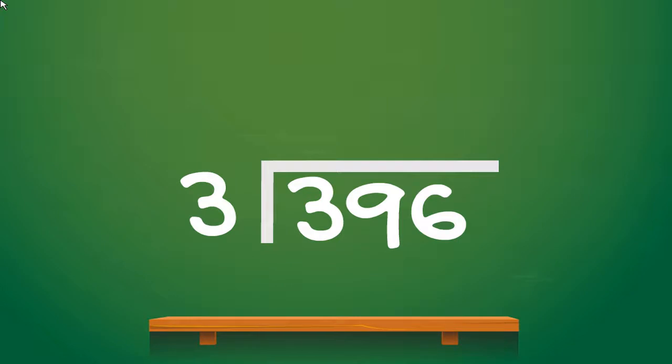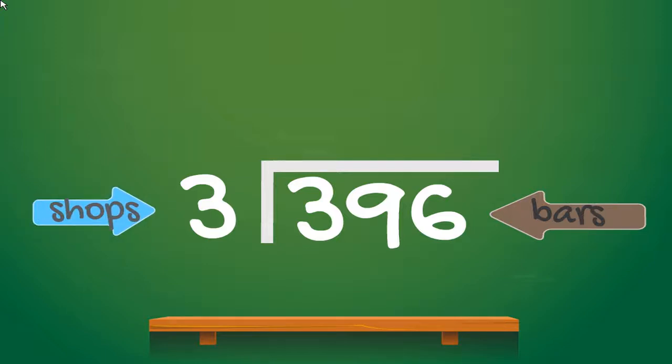So what have we got here? You remember from the last video we talked about a chocolate factory and chocolate bars and sending them out to different shops. In this case, at the end of the day I have 396 chocolate bars to share between three different shops. So how are we going to do that?